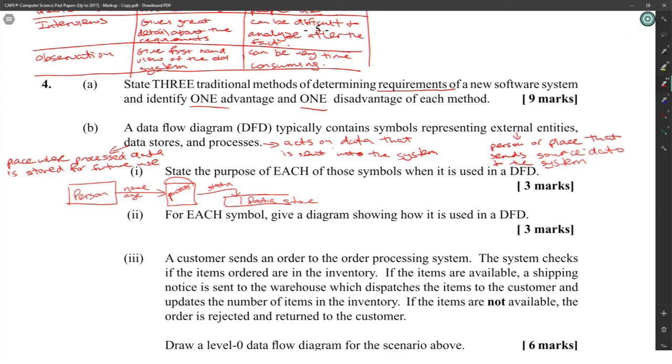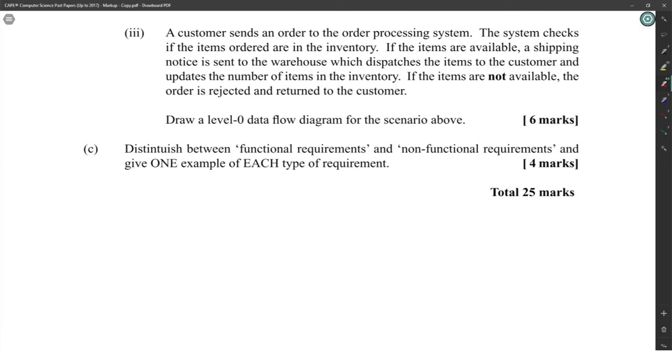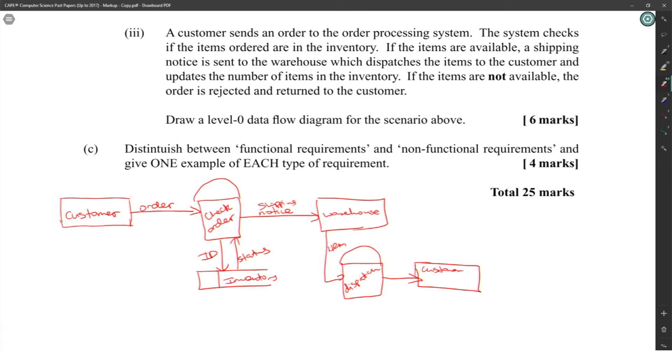A customer sends an order to the order processing system. The system checks if the items ordered are in the inventory. This data flow will look like cake. Customer sends an order to the order processing system, check order, checks to see if it's in the inventory. Inventory is a data store. If the items are available, a shipping notice is sent to the warehouse which dispatches the items to the customer and updates the number of items in the inventory. So the warehouse sends the items to the customer. If the items are not available, the order is rejected and returned to the customer.